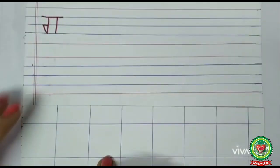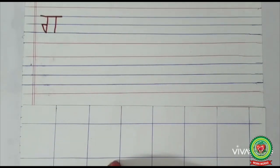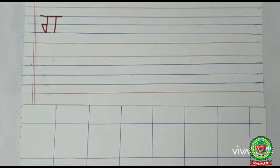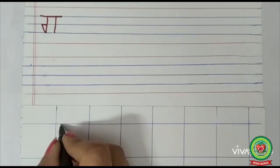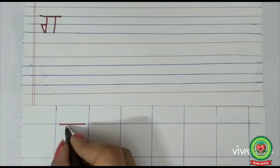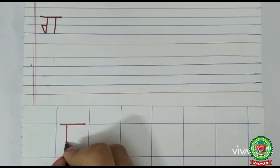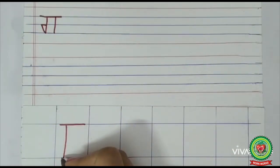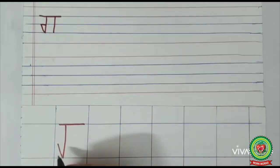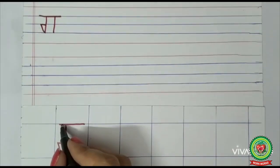Now for practicing gaga on copy, you must use a square-line copy. I will teach you how to write gaga in a square box. Our first step is to draw a sleeping line like this, then after leaving some gap we draw a standing line, then a slanting line in an upward direction.